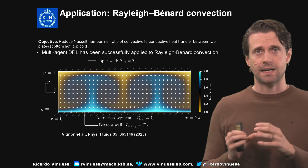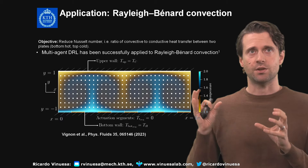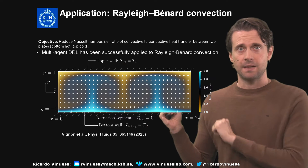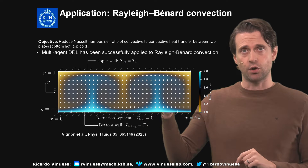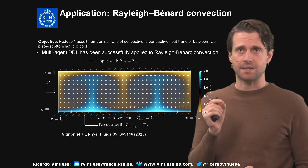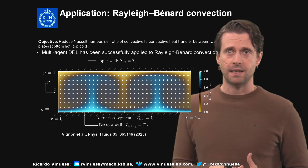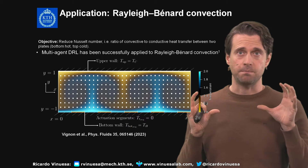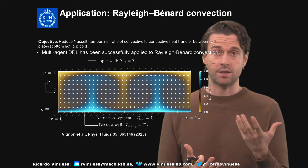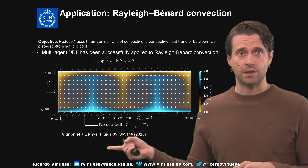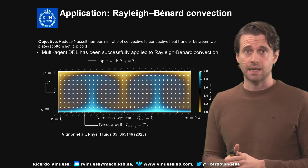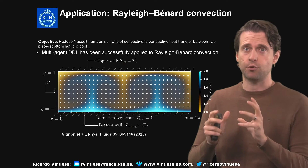What I wanted to talk about today is a nice example that illustrates the power of multi-agent reinforcement learning compared with single-agent reinforcement learning. The case is a Rayleigh-Bénard convection problem: the bottom wall is hot and the top wall is cold, producing natural convection with two convection cells. We want to minimize the Nusselt number, which measures the ratio of convective to conductive heat transfer, for applications relevant to heat exchangers and industrial settings. This work is by Vignone and others, published in Physics of Fluids, with all codes and references available in the repository.